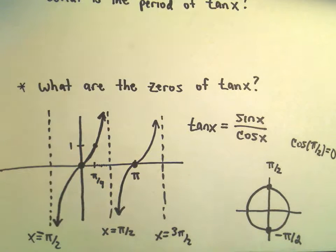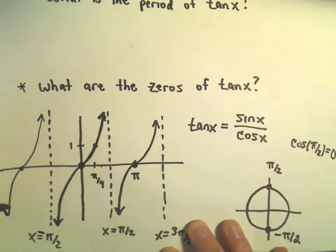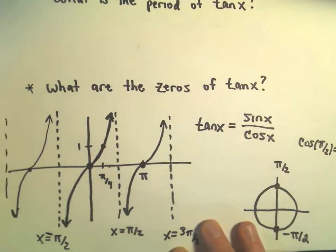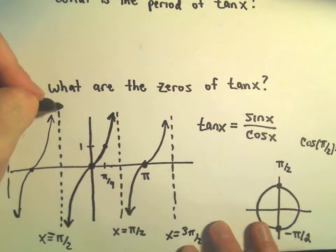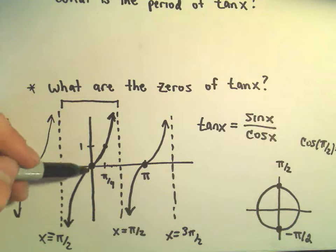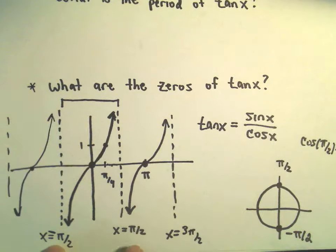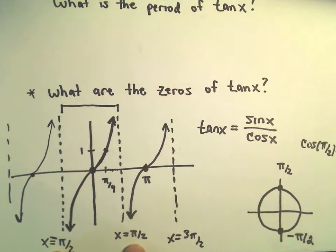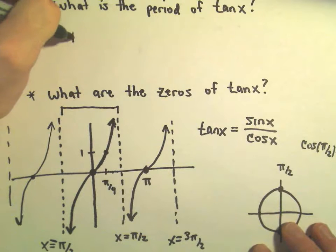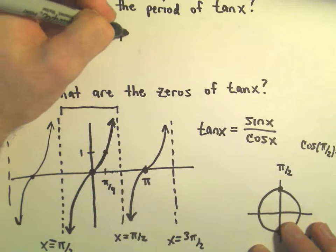To figure out the period, all we have to do is think about this distance - how far do you have to go before the graph starts repeating? If you go from negative π over 2 to positive π over 2, that's going to be a distance of π. So we would say that the period is π.